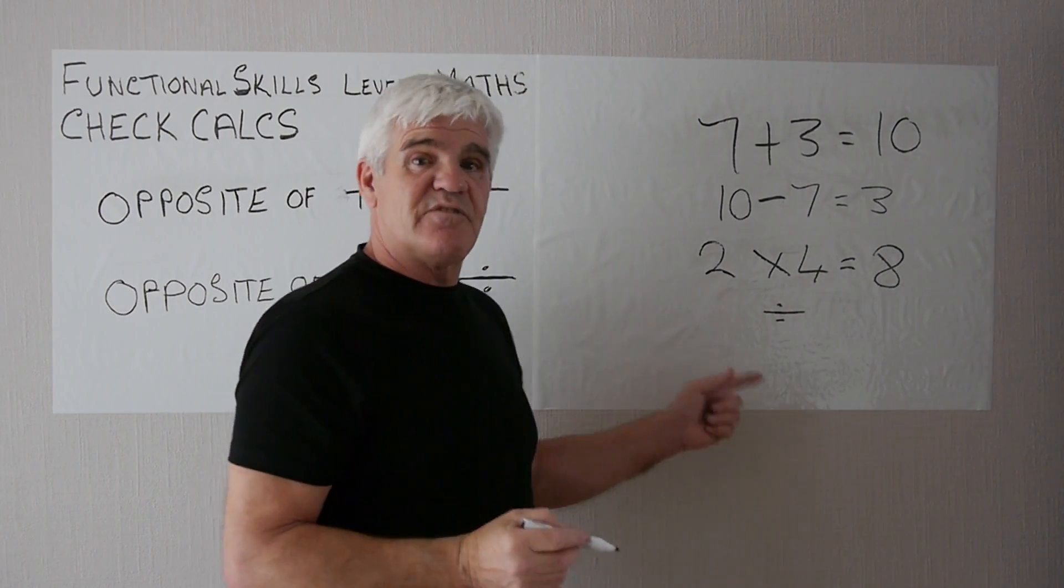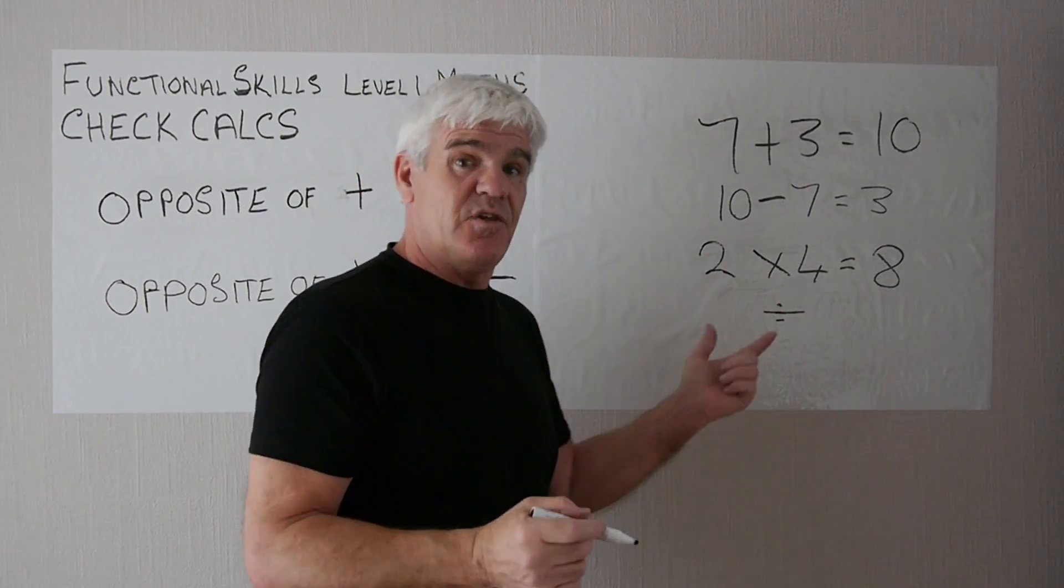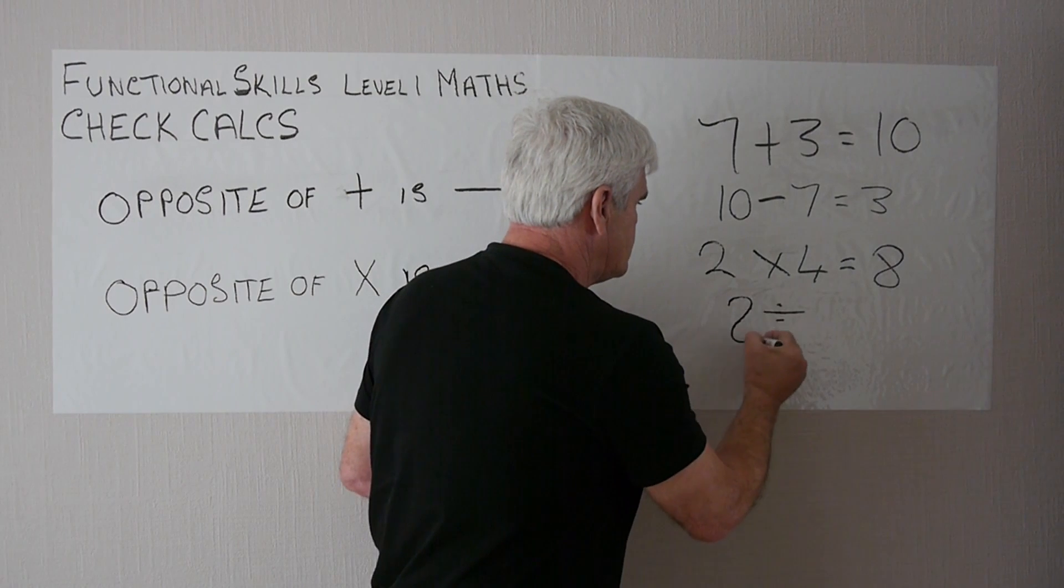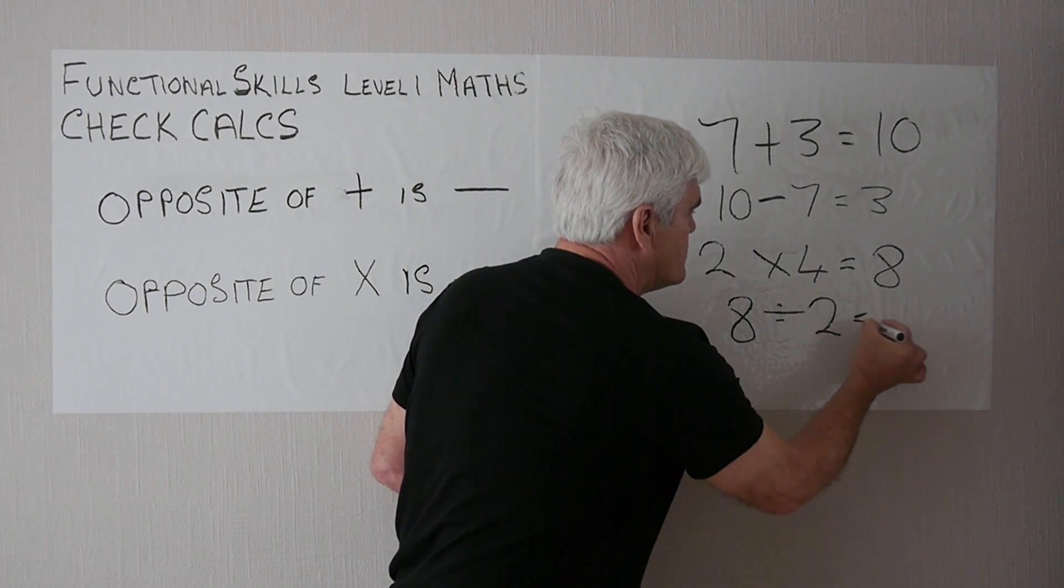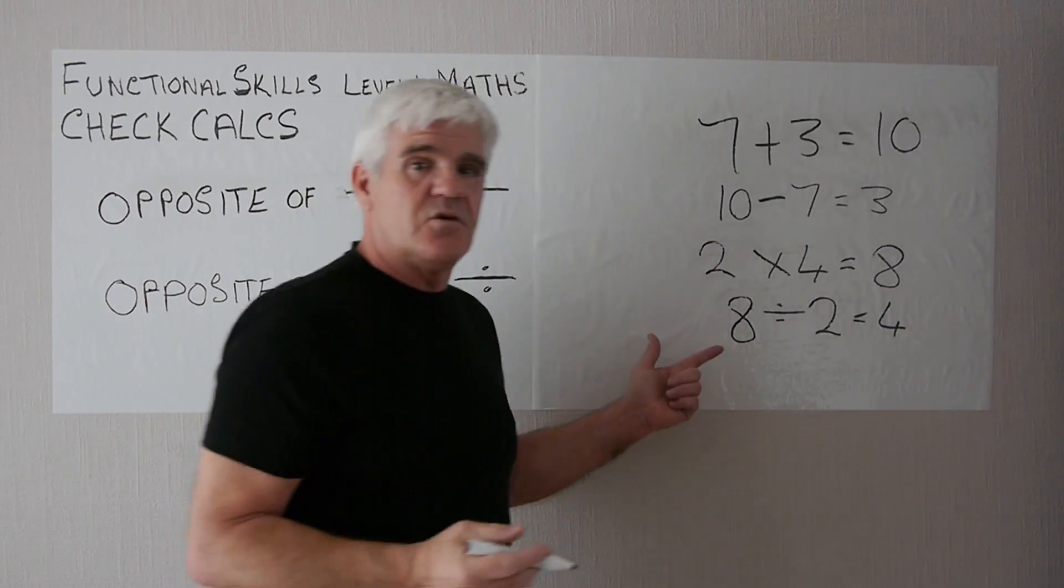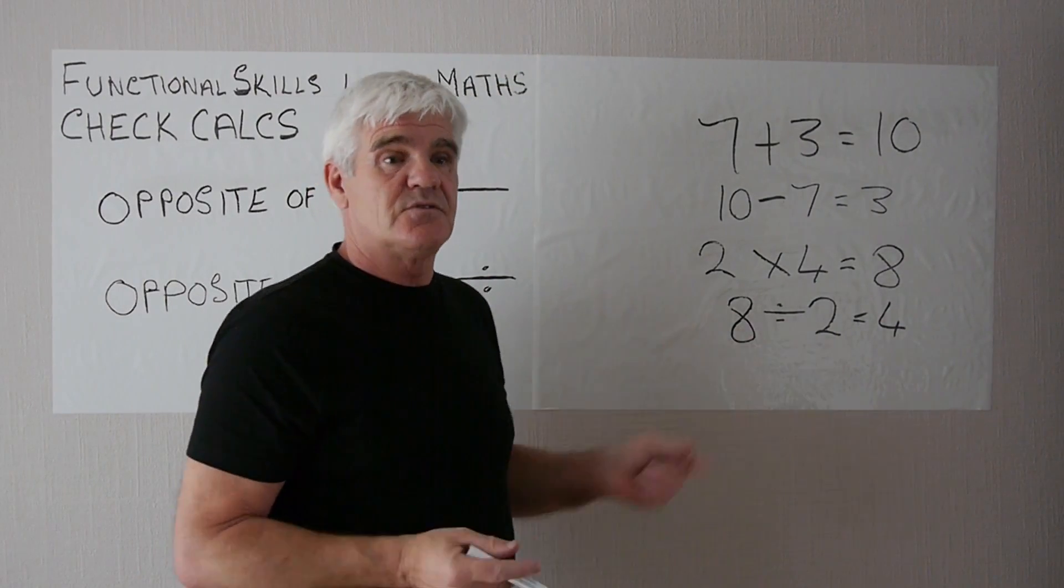If we look at 2 times 4 equals 8, we take the answer, the 8, divided by the 2, there you go, actually performed another check count. So don't forget, the opposite of plus is minus, and the opposite of times is divide.